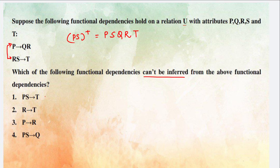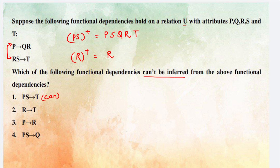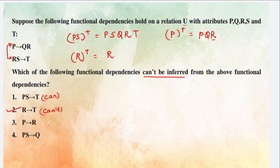Now check option 2: R→T. Taking the closure of R alone: R gives only R, because T is obtained only when R and S are combined — R alone cannot give T. So R→T cannot be inferred; this is the answer. Checking option 3: P→R — closure of P gives {P,Q,R}, so yes, P can derive R; it can be inferred. Option 4: PS→Q — closure of PS already gives Q, so that can be inferred too. The only thing that cannot be inferred is option 2: R→T.